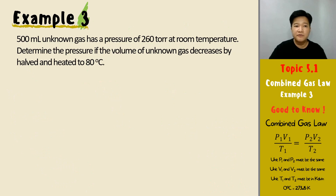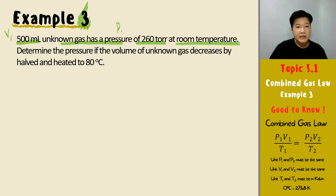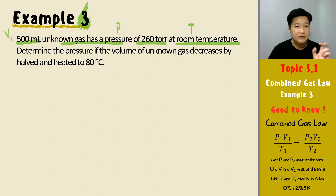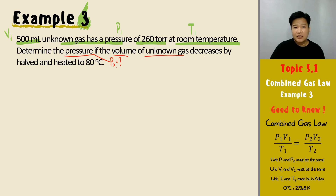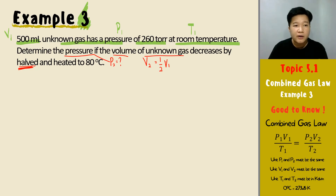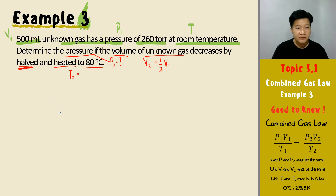Last example: 500 mL of an unknown gas (V1) has a pressure of 260 torr (P1) at room temperature (T1). Determine the new pressure (P2) if the volume decreases by half and the temperature is heated to 80 degrees Celsius (T2). The volume decreasing by half means V2 is half of V1.